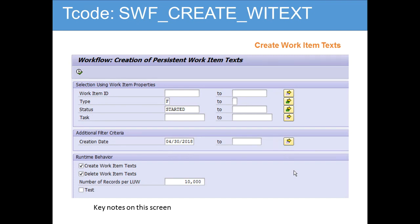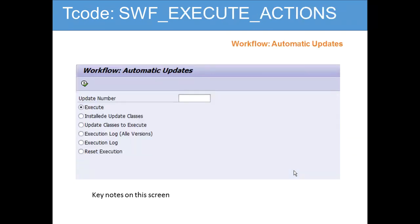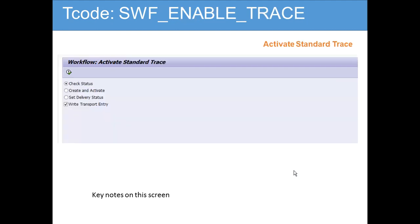Here is the Workflow Create Work Item Text, where you can create the type of work item text. Then there is Workflow Automatic Updates, where you can execute the type of update you want. If you notice, some of these names are already in German, so they are pretty brand new. This performs automatic updates, similar to workflow customizing.